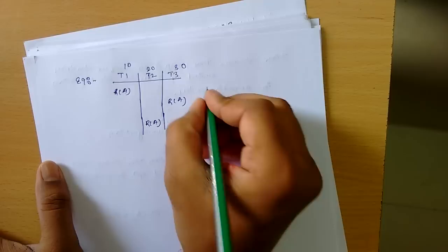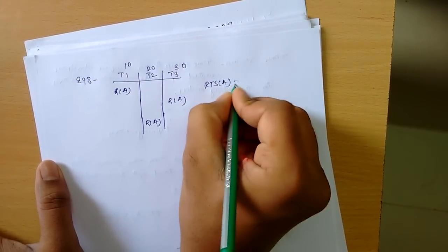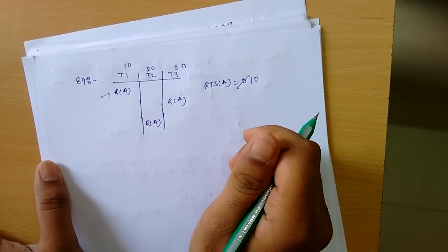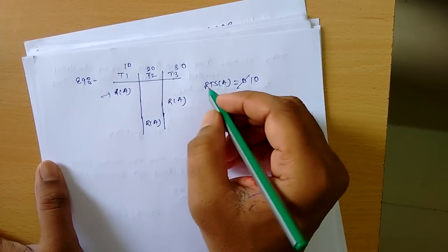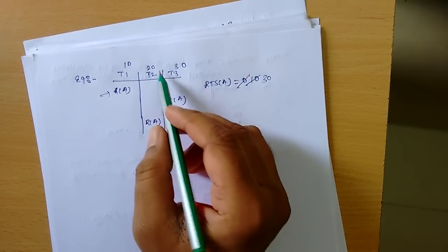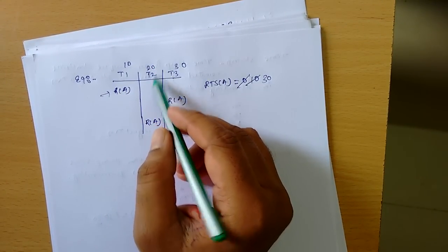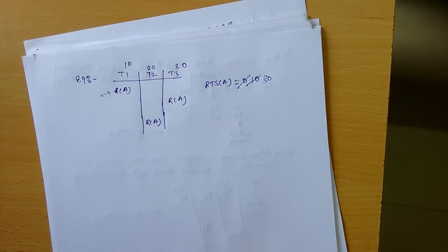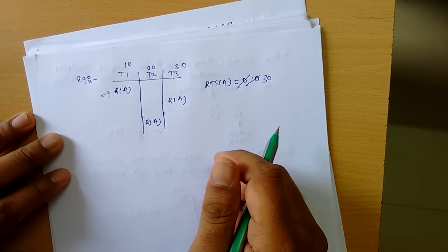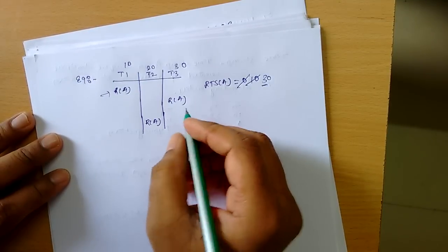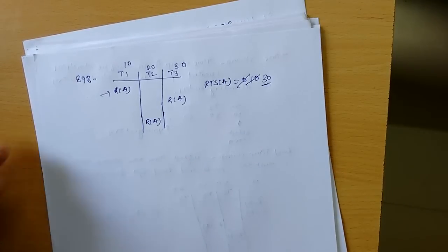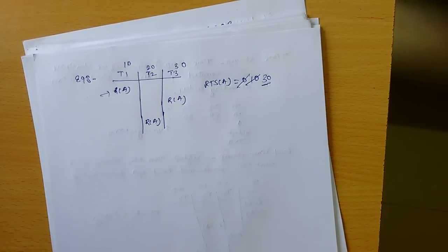For example, RTS of A is initially 0. T1 performs a read operation so it updates to 10. T3 then performs a read operation so it updates to 30. T2 performs a read operation but we set the value to the maximum, which is 30, so it remains 30 and does not update to 20.